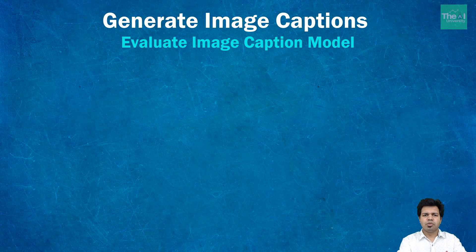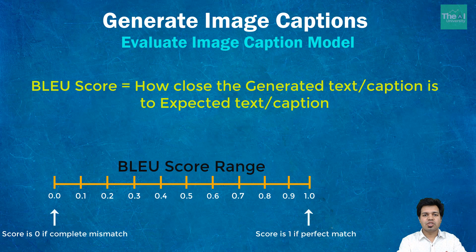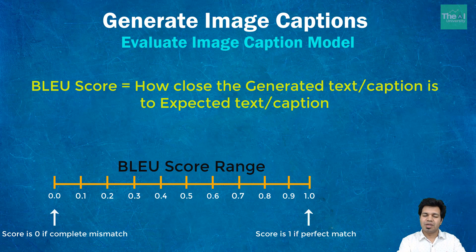So what is BLEU score and how do we use it for the evaluation of deep learning models involving text? BLEU score, which stands for Bilingual Evaluation Understudy score, basically summarizes how close a particular generated text is to the expected text. BLEU score is majorly prevalent in machine translation, but it can be used to evaluate other types of models related to image captioning, text summarization, speech recognition, etc.